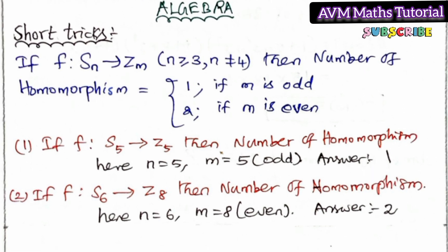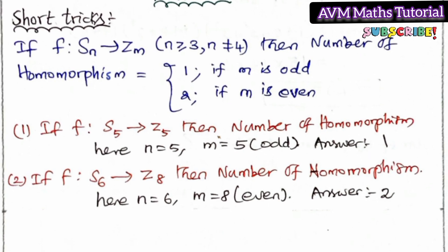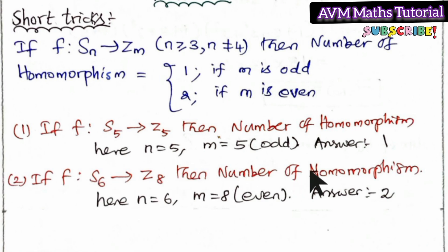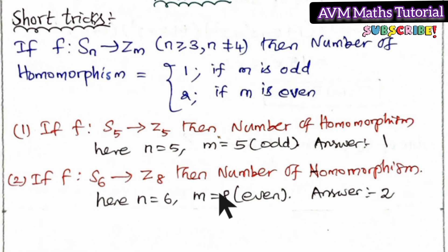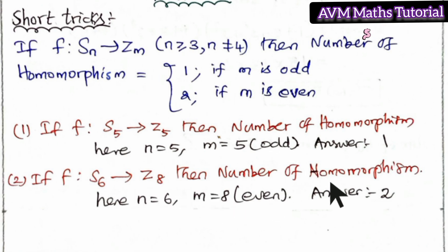Second problem: suppose F is from Z6 to Z8. The number of homomorphisms — here N is 6 and M is 8. Comparing, the number of homomorphisms is 2.